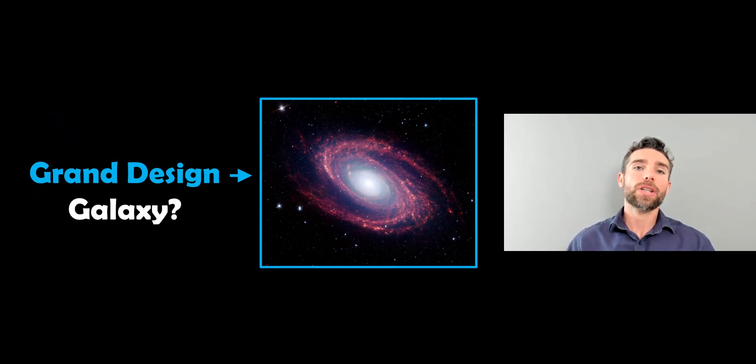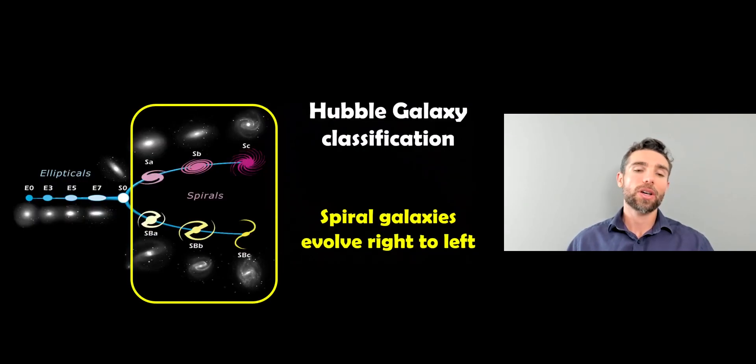Welcome to this video, where I wanted to have a quick look at what grand design galaxies are. So before we do that, let's go back to the Hubble classification for galaxies, the tuning fork, where you have elliptical galaxies and spiral galaxies.